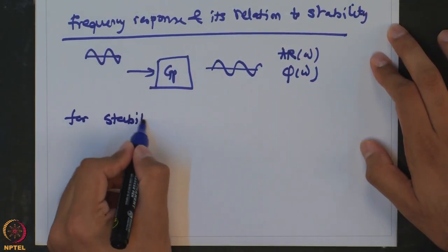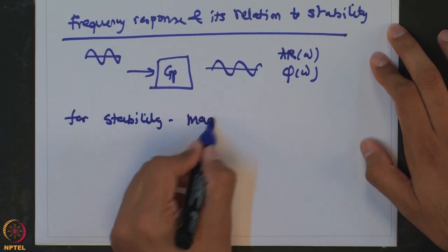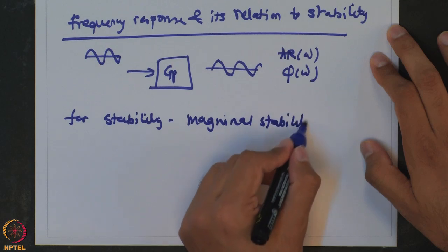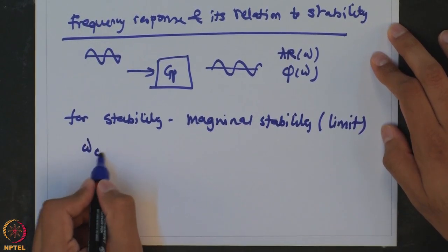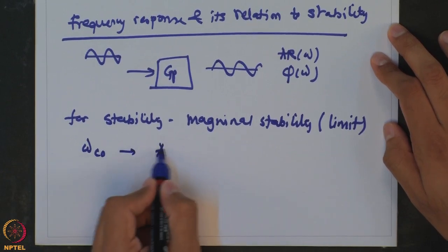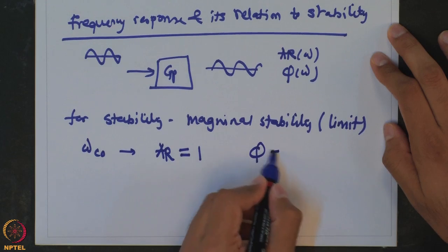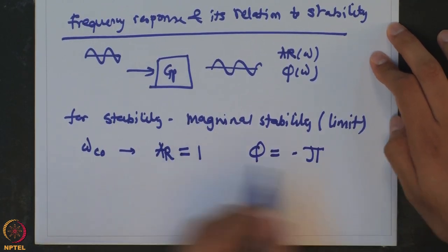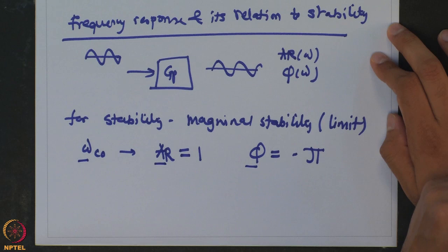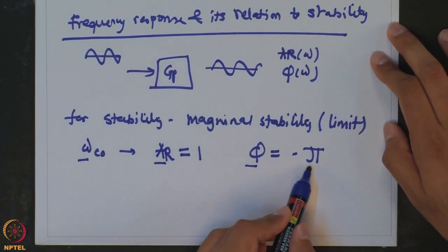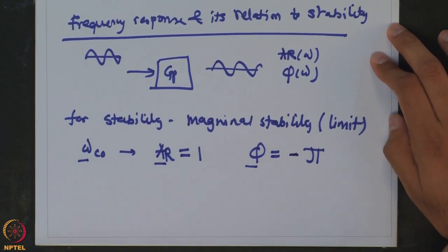How is frequency response related to stability? For marginal stability — the stability limit — what we calculate is a crossover frequency such that when the phase is equal to minus pi, the amplitude ratio is equal to 1. That gives you marginal stability. So if you find a point where the phase is minus pi and the amplitude ratio is equal to 1, that system is at the limit of stability.